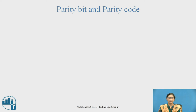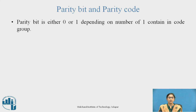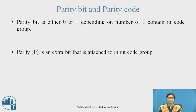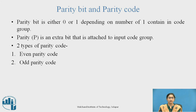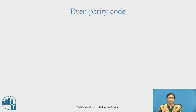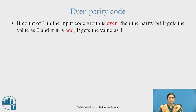Parity Bit and Parity Code. A parity bit is either 0 or 1 depending on the number of 1s contained in the code group. Parity bit P is an extra bit that is attached to the input code group. There are two types of parity code: Even Parity Code and Odd Parity Code.